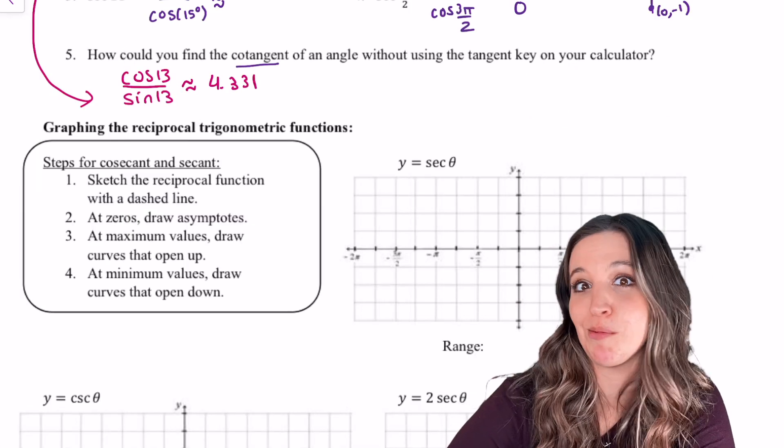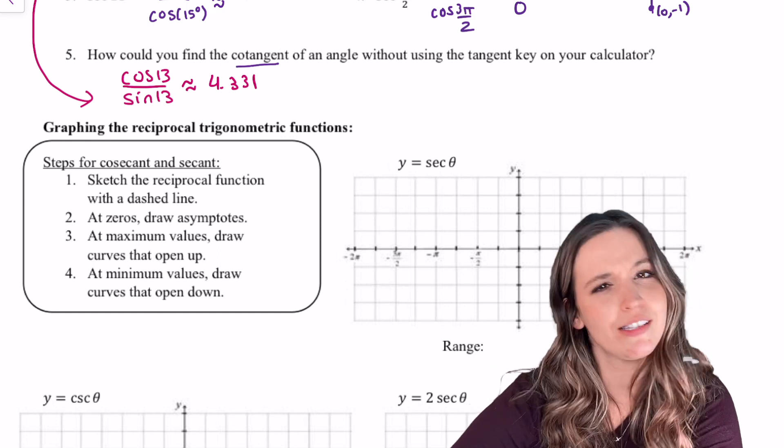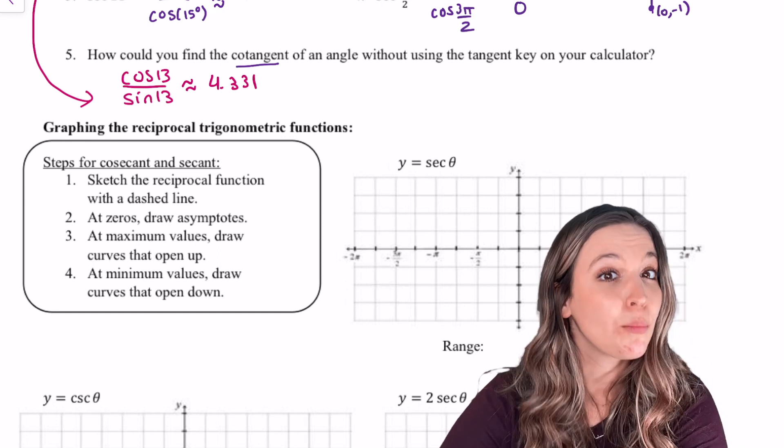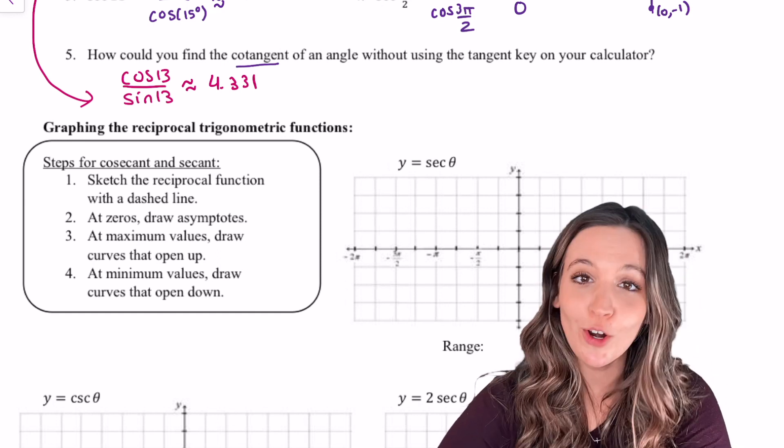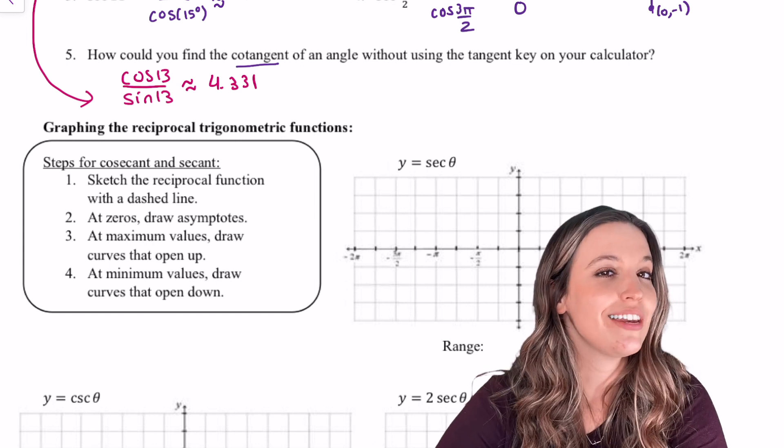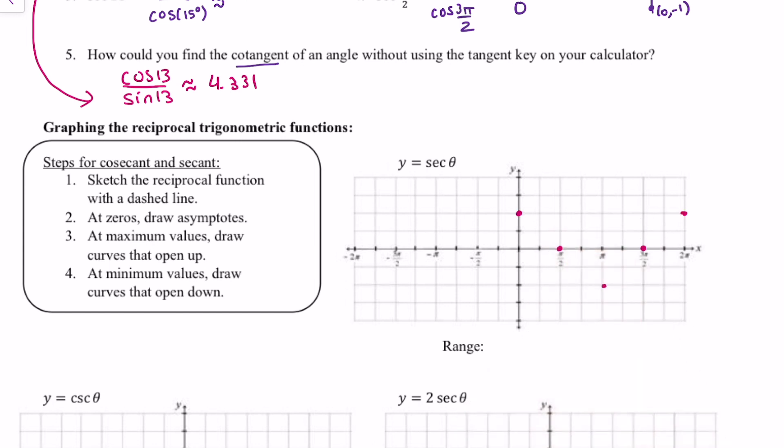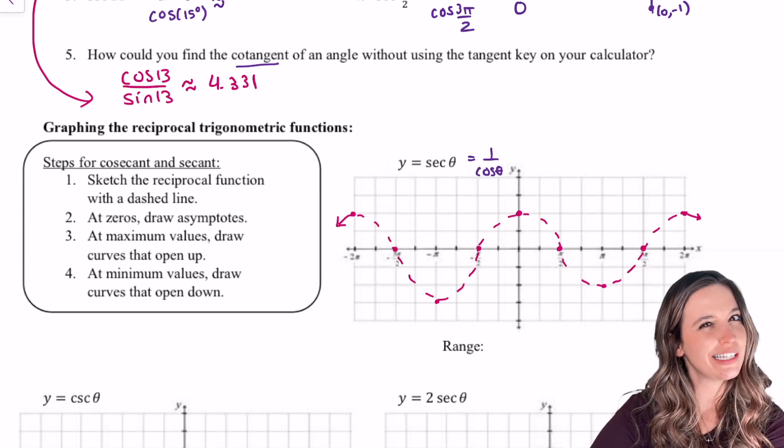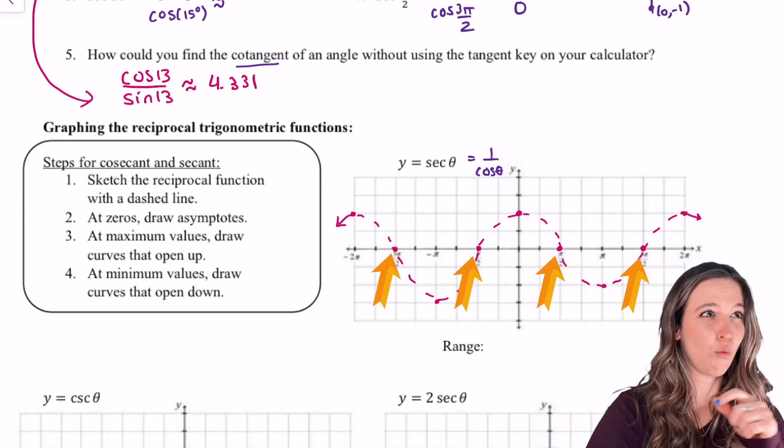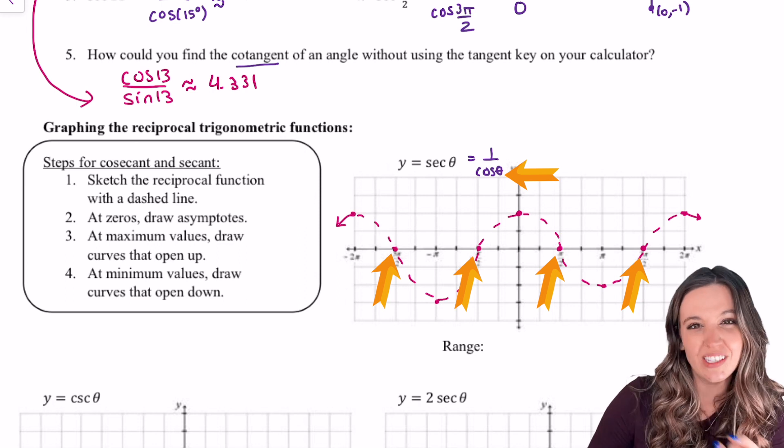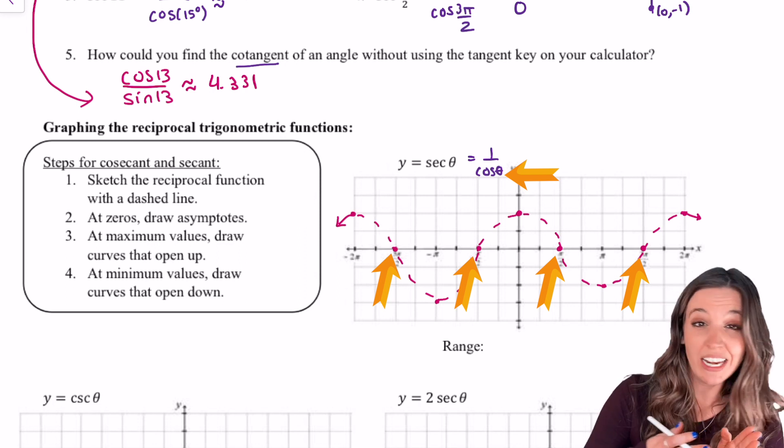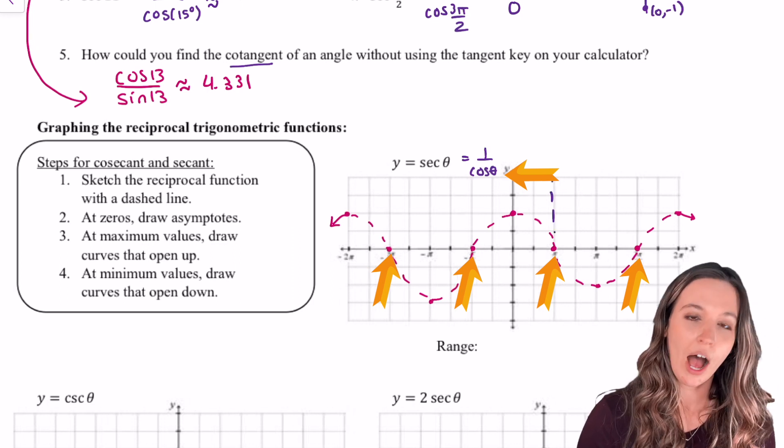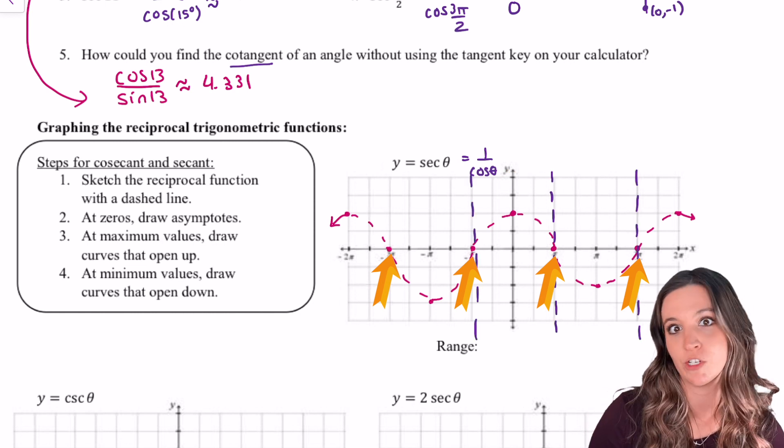Now time to graph these reciprocal functions. First, secant. Secant is the reciprocal of cosine. So first, let's sketch cosine with a dashed line. Hmm, where the cosine graph is 0, I would have 1 divided by 0. So that's a vertical asymptote. So anywhere my cosine graph is 0, I can draw a vertical asymptote for secant.